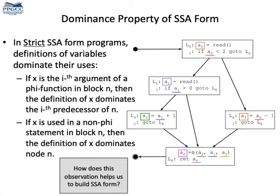Notice that in the cases of uses that are arguments of phi functions — like the uses of a2, a1, and a3 in the definition of a4 — the property is a bit different. For instance, variable a3 is used in the phi function that defines a4, where l6, where a3 is defined, does not dominate l8 where the phi function is defined, but l6 dominates the edge l7 to l8.